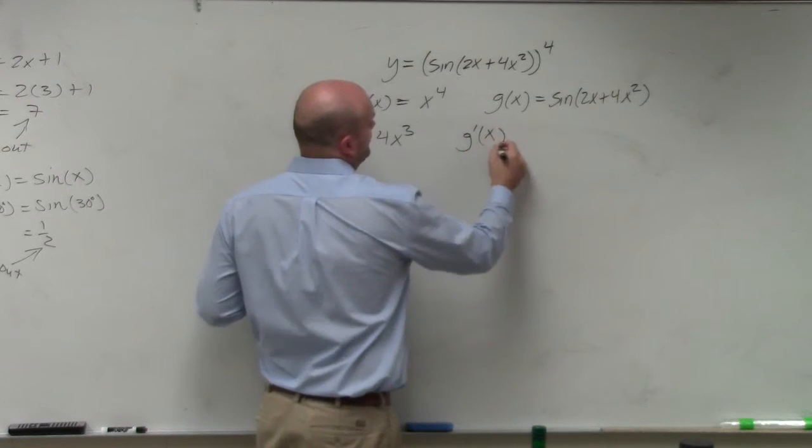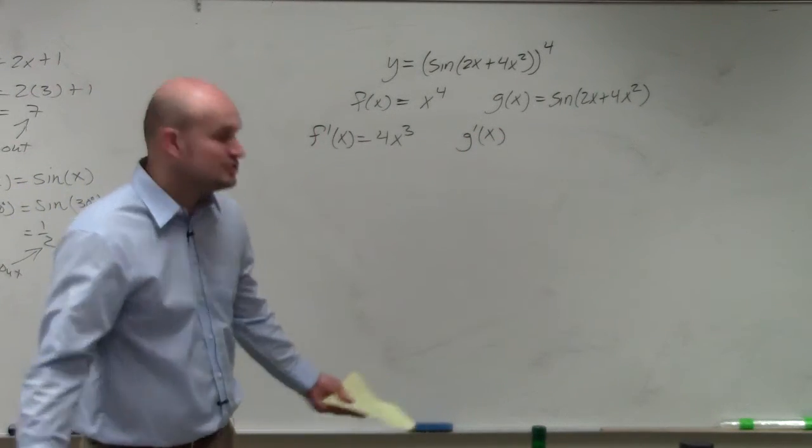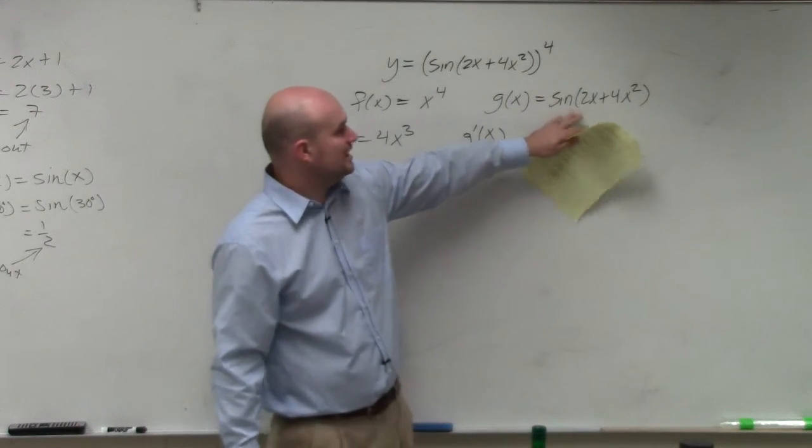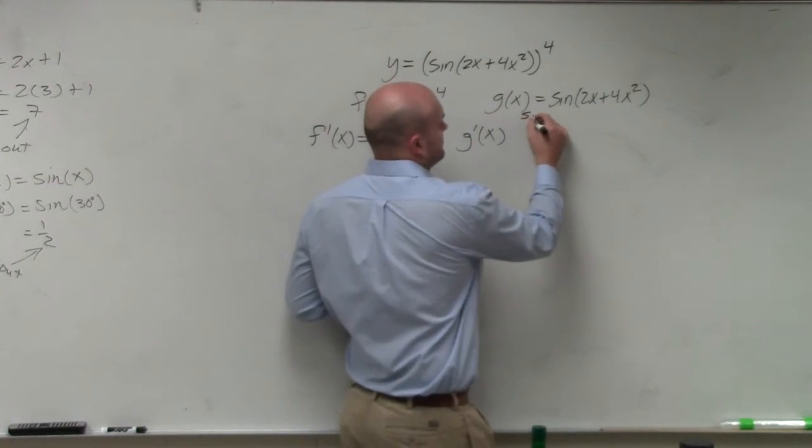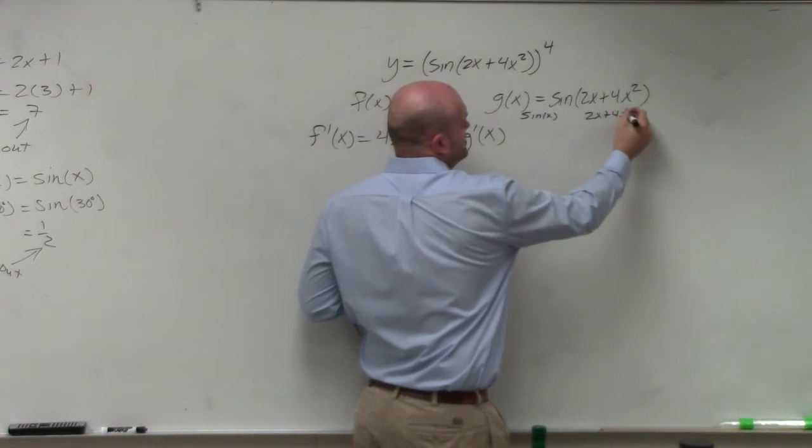g prime, though, is, again, we have a little bit of issue. We're going to have to go ahead and use the chain rule. So I can say my outside function is sine of x. Inside function is 2x plus 4x squared.